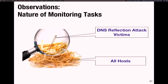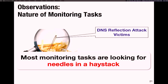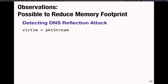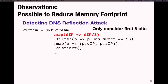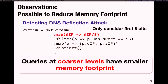This inspired us to explore a technique where we spend limited resources only on the portion of traffic that is going to satisfy the query. Another observation was that with simple transformations to existing queries, it is possible to reduce their memory footprint. For example, for a given query, if we apply a map operator that considers only 8 bits of the destination IP field and then execute the query as-is, we're executing the query at a coarser refinement level. The stateful operators distinct and reduce then require less memory.